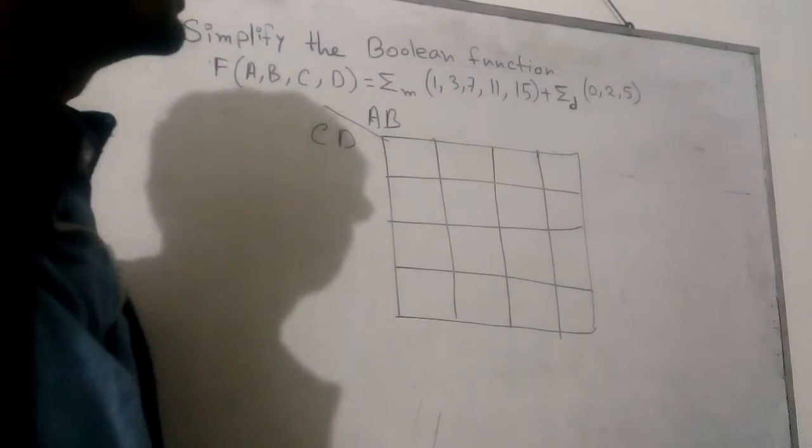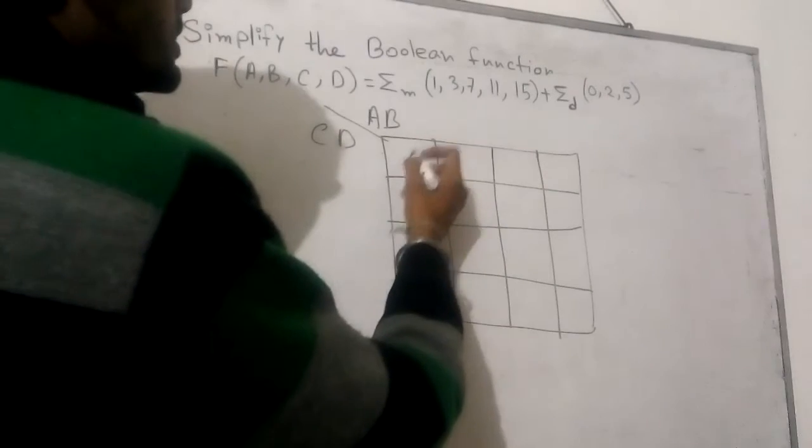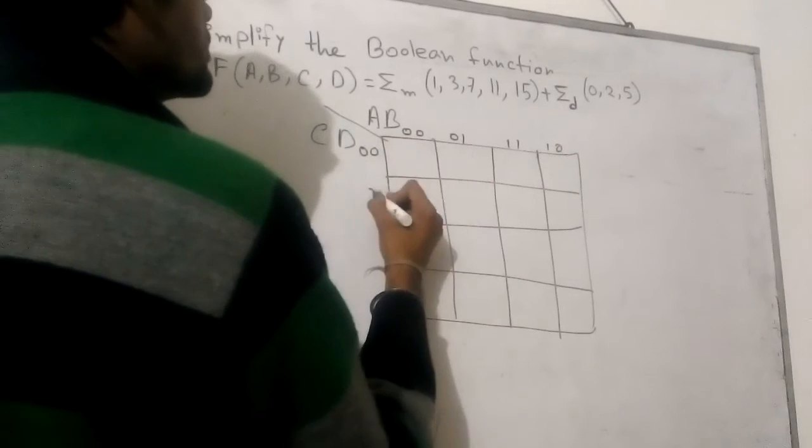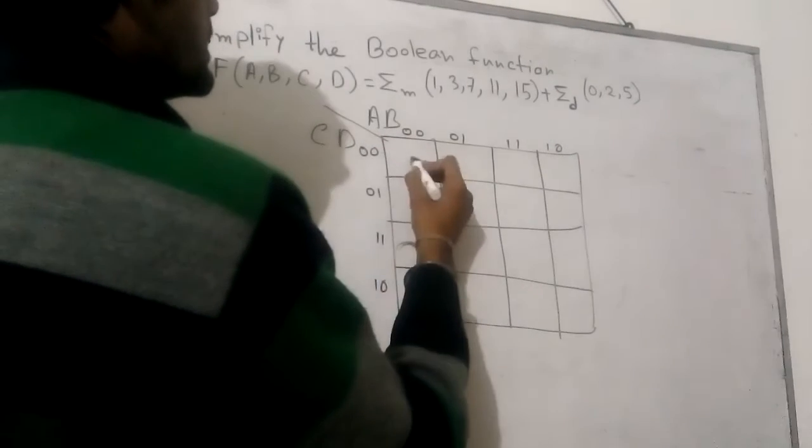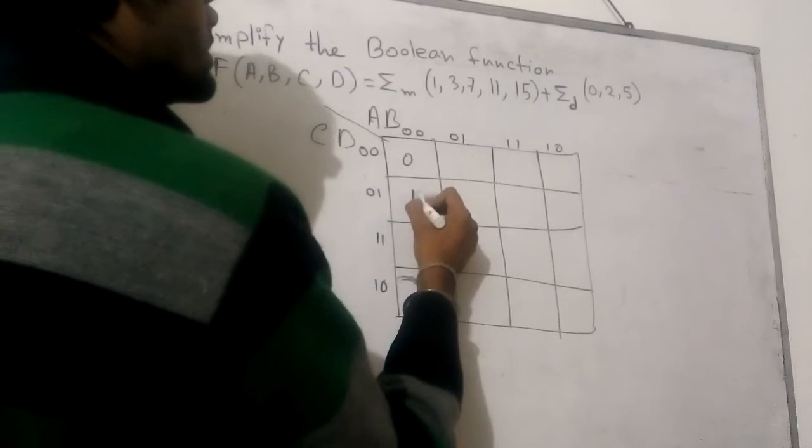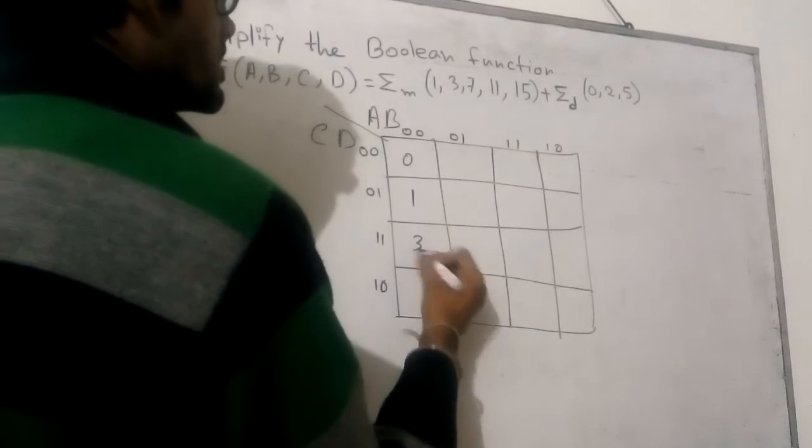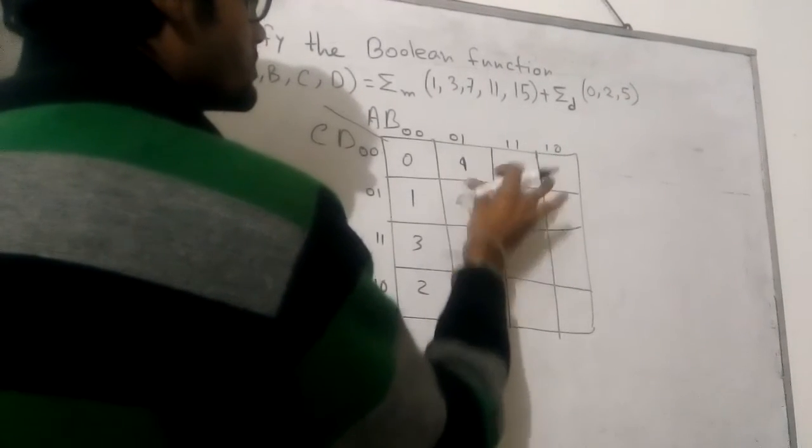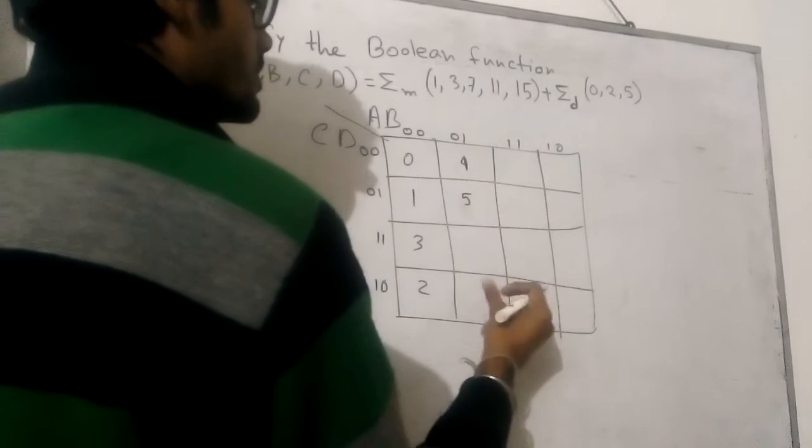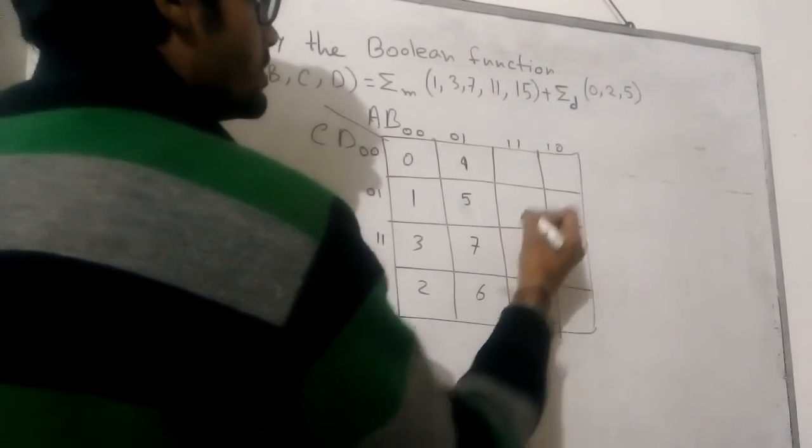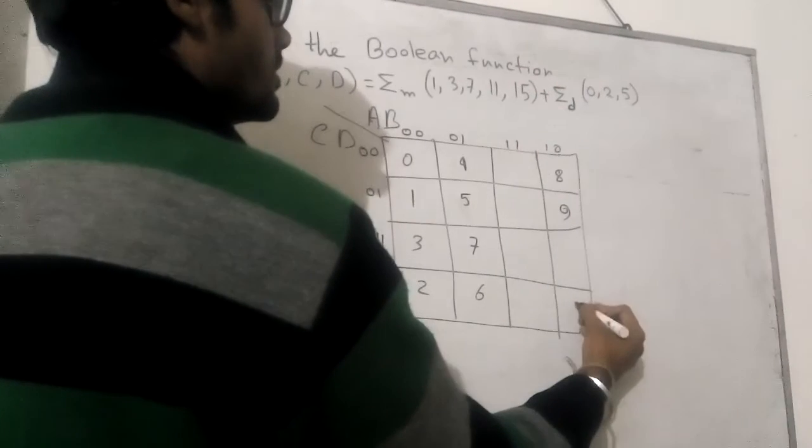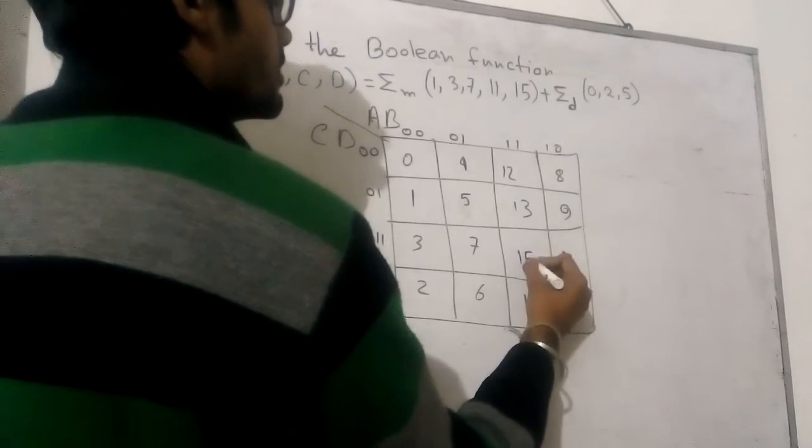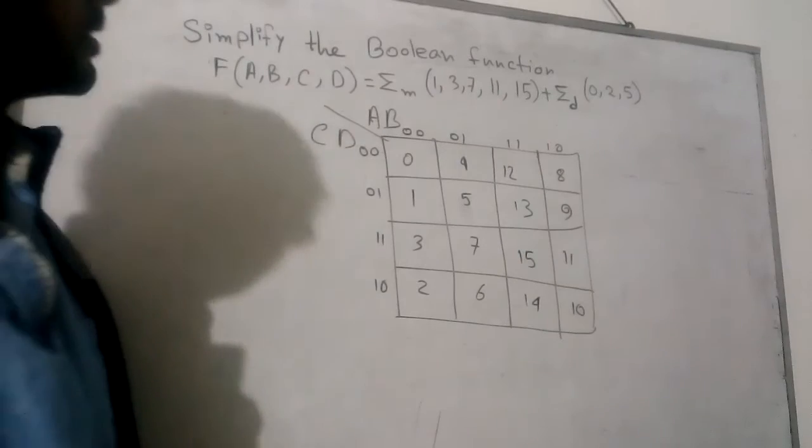As we know, the values are labeled like this: 0, 0, 0, 1, 1, 1, 0, 0, 0, 1, 1, 1, 0. This is 0, this is 1, this is 3, this is 2, this is 4, 5, 6, 7, 8, 9, 10, 11, 12, 13, 14, 15.